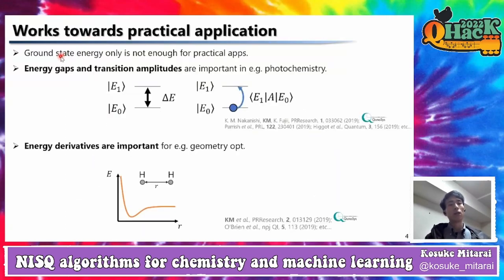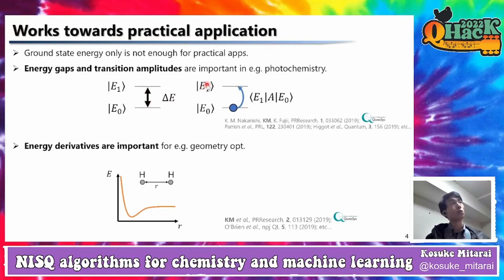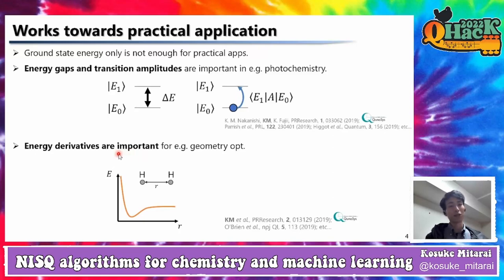Many variant works go towards practical applications for the VQE. Ground state energy is not enough for practical applications — for example, we have to calculate energy gaps and transition amplitudes between states to understand reactions in photochemistry. We should also know energy derivatives to perform, for example, geometry optimization of molecules. We have done some work on this, but this is not the main topic of this talk.